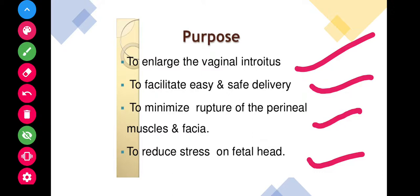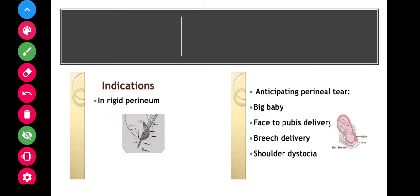This minimizes over-stretching and rupture of the perineum muscles. Let us see the indications of episiotomy. It will be done in rigid perineum and anticipating the perineal tear in cases of big baby. This perineum tear will occur due to big baby, due to face to pubis delivery, due to breech delivery, or due to shoulder dystocia.